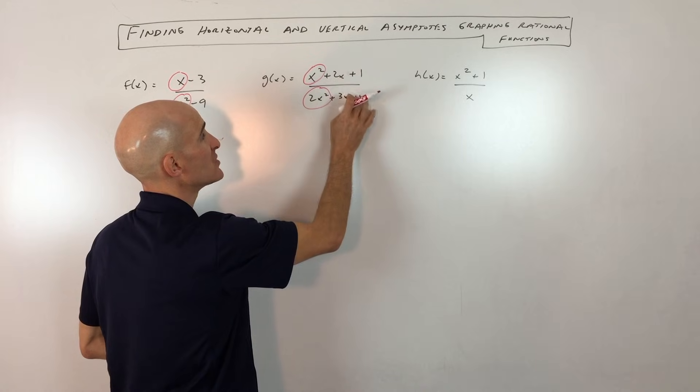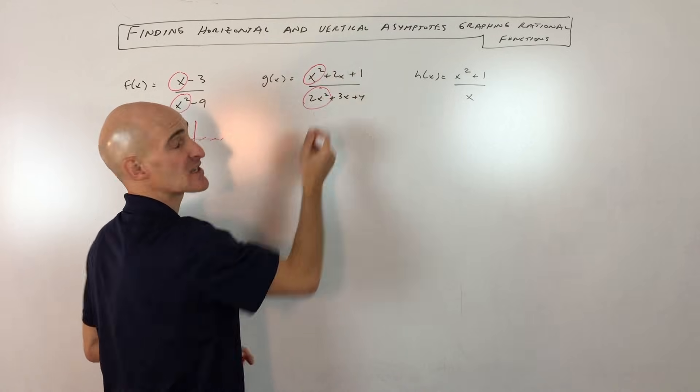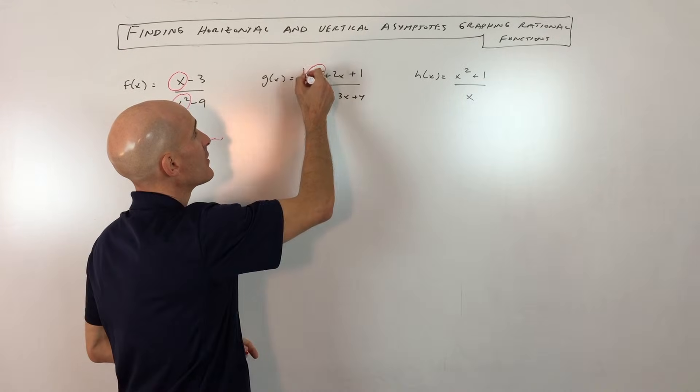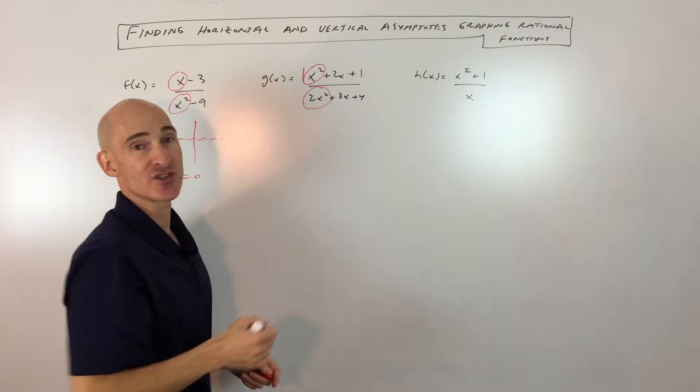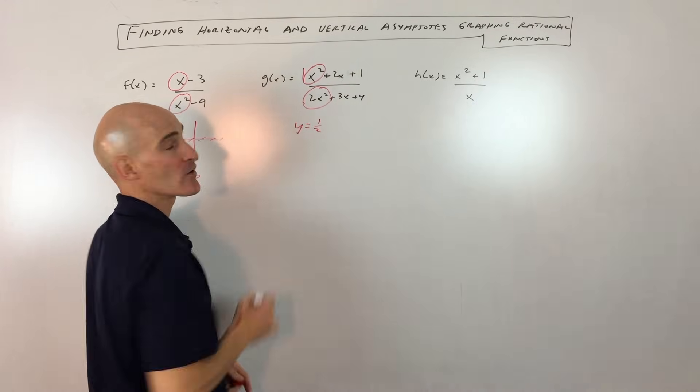That means this term is growing at the same rate as this term. These terms are growing much faster than these two terms. So if we cover those up, the graph is going to behave like this as x gets very large. And because they're growing at the same rate, we get the ratio of the coefficients. In this case, it's going to be one over two. Our horizontal asymptote is going to be y equals one half.